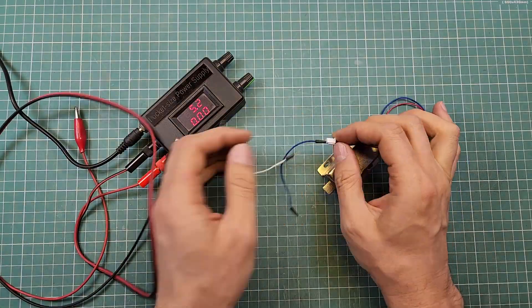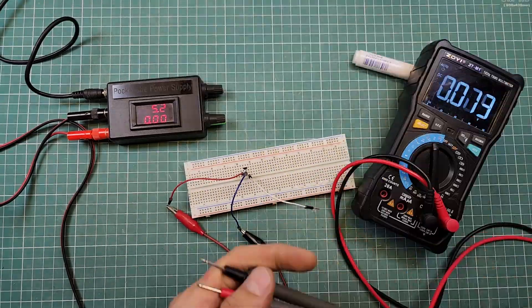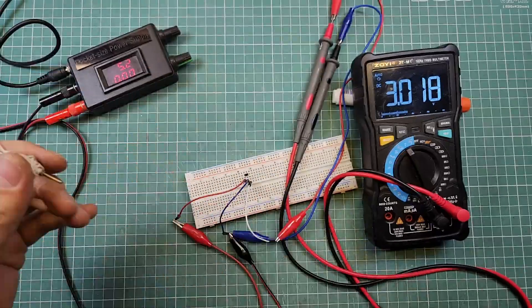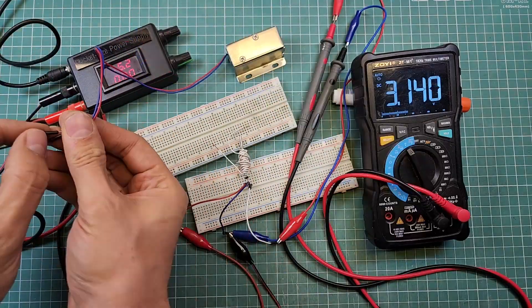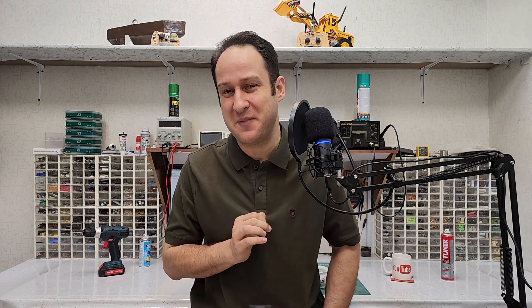In this video I want to teach you two main methods of DC current measurement using a microcontroller, so that you won't have any problems measuring DC current from now on. After watching this video you will no longer have any theoretical problems measuring small or large DC currents. There are two general methods for measuring DC current: the first one is to use a shunt resistor, and the second one is to use a Hall effect sensor.